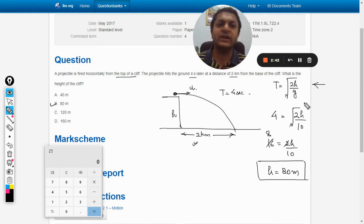The formula for time period is root of 2h by g. You can derive it by concentrating on its vertical motion. We can say that u is 0 for the vertical motion, and then s = ut + (1/2)gt^2.